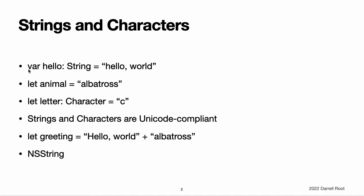This makes it easy to create custom string values for display, storage, and printing. Despite the simplicity of syntax, Swift's String type is a fast, modern string implementation. Every string is composed of encoding-independent Unicode characters and provides support for accessing those characters in various Unicode representations. Note: Swift's String type is bridged with Foundation's NSString class. Foundation also extends String to expose methods defined by NSString. This means if you import Foundation, you can access those NSString methods on String without casting.